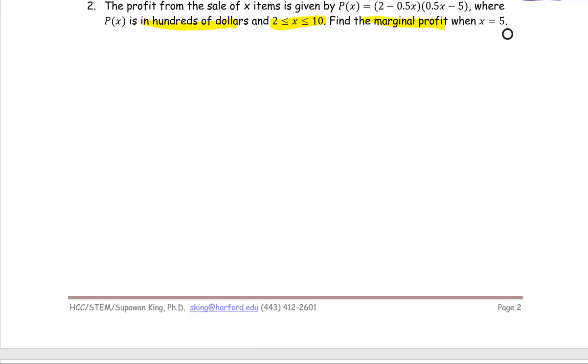From the key term here, the marginal profit means P prime or the derivative of the profit function. And when x equals 5, that means we're going to evaluate when x equals 5 after we derive the derivative of the profit function.